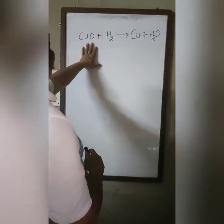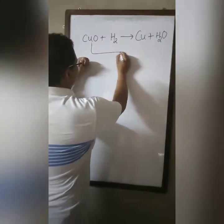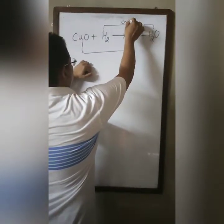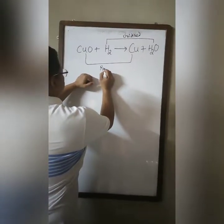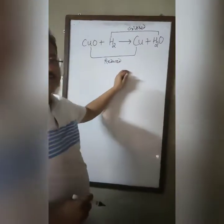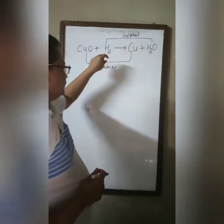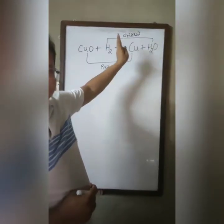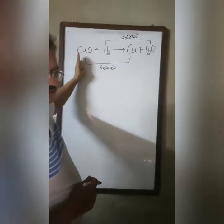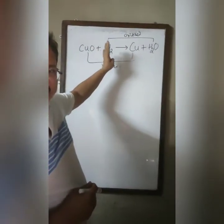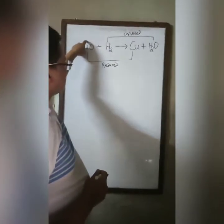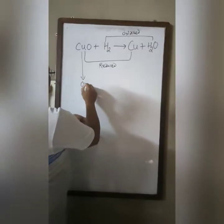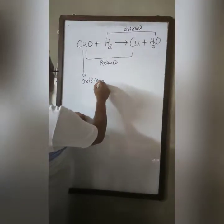Here, as you can see, copper oxide is getting reduced to copper and hydrogen is getting oxidized to water. This is reduced. Now here, related to this, another concept I want to explain. Hydrogen is getting oxidized to water because of copper oxide — the oxygen has been provided by the copper oxide. So here we can say copper oxide provides oxygen.